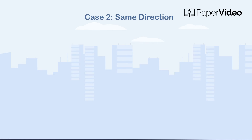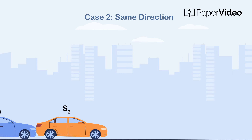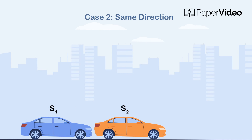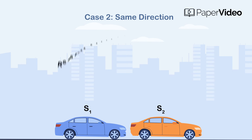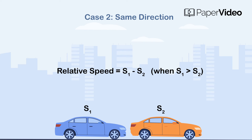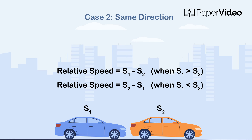The second case is when the bodies are moving in the same direction. Suppose two bodies are moving in the same direction at the speed of S1 and S2 respectively. Then the Relative Speed is given as S1 minus S2 where S1 is greater than S2, or S2 minus S1 where S2 is greater than S1.